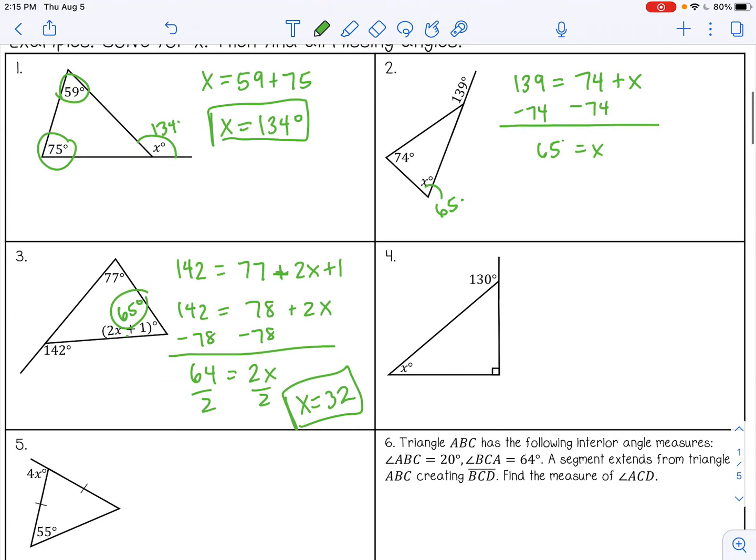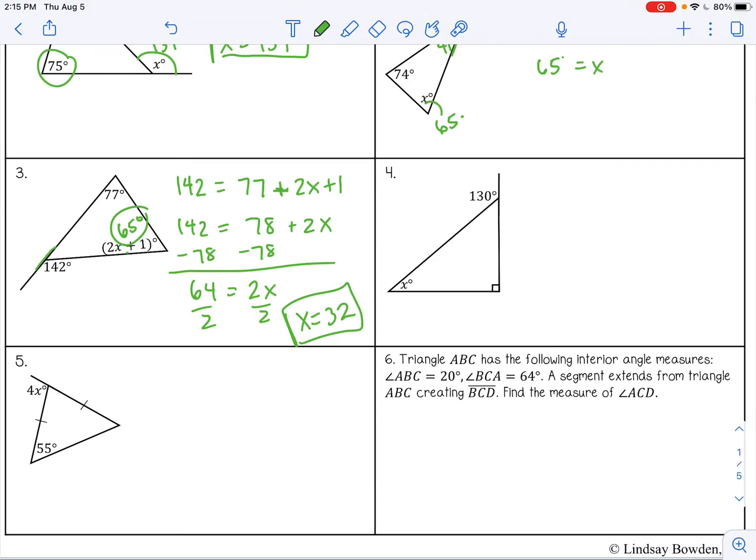You can also find the other interior angle, of course, just subtract from 180, so let's go back to number two and do that. So 180 minus 74 minus 65 is 41, or even faster, these are supplementary because they form a line, so you could just take 180 minus 139. Same thing here, 180 minus 142, 38.